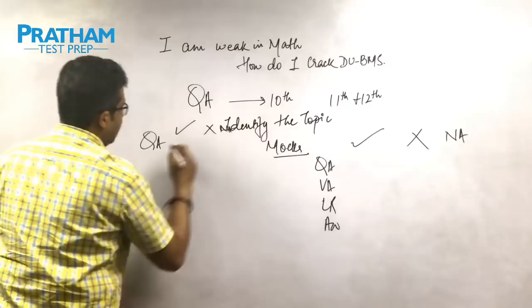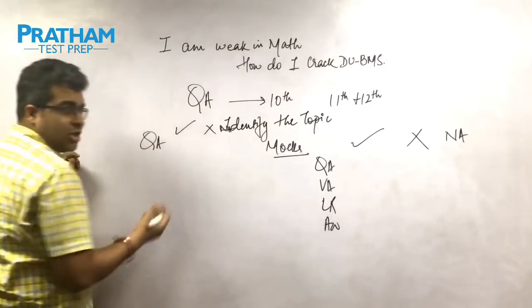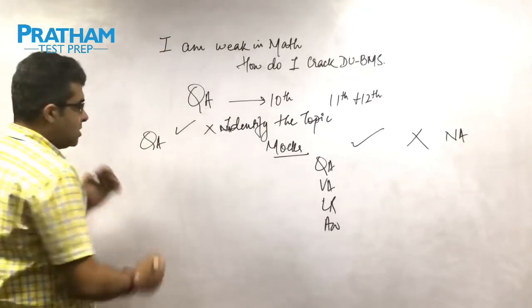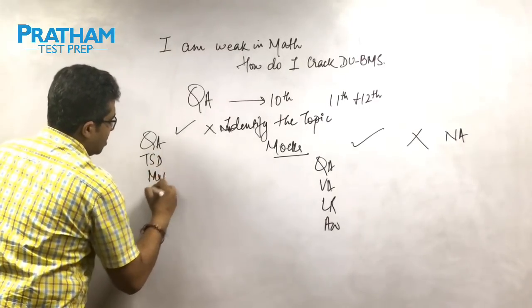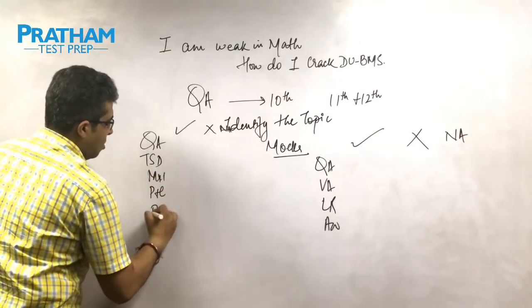How many rights, how many wrongs, and how many non-attempts for each topic in quant that you've encountered like time, speed, distance, or mixtures and allegations, or permutation, combination, or probability.